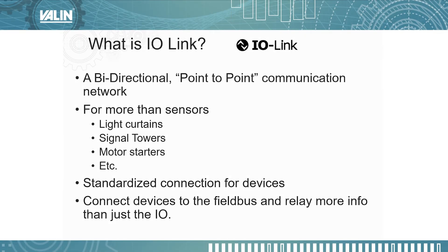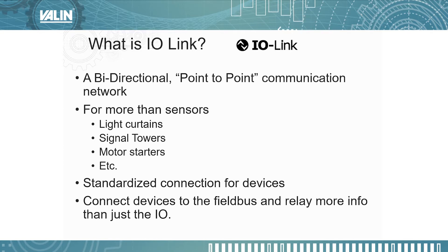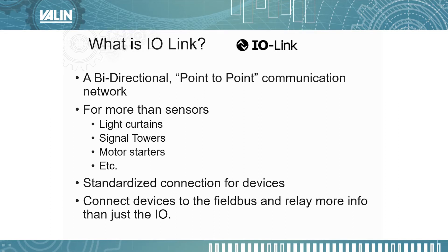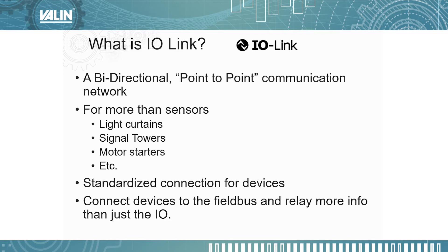So what is IO-Link? Basically, it's a bi-directional point-to-point communication network — meaning it communicates from the device to a master and from the master to the device. It's traditionally thought of as being used for sensors such as inductive sensors or photo sensors, but it can also be used for light curtains equipped with an IO-Link interface, signal towers, motor starters, relays, etc.